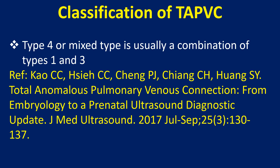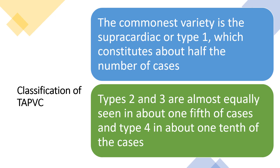Type 4 or mixed type is usually a combination of types 1 and 3. The commonest variety is the supracardiac or type 1, which constitutes about half the number of cases. Types 2 and 3 are almost equally seen in about one fifth of cases, and type 4 in about one tenth of cases.